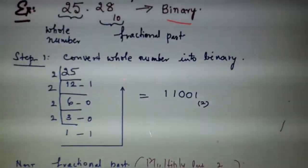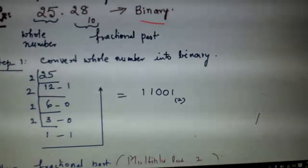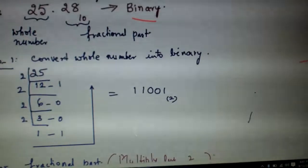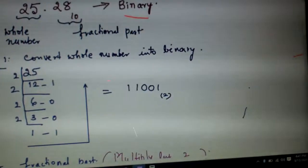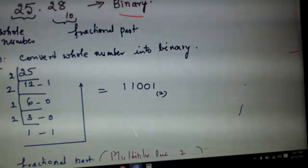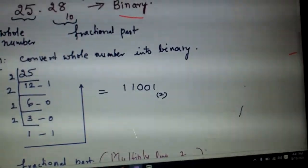For that what will you do? You go on dividing it by 2. When you go on dividing it by 2, you get 12 remainder 1, then 6 remainder 0, then 3 remainder 0, then 1. And write the remainders in the reverse order. So as before you get it as 11001.